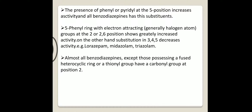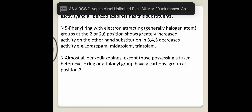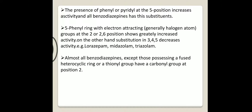The third point is the presence of phenyl or pyridyl at the fifth position increases activity, and all benzodiazepines have this substituent. The 5-phenyl ring with electron attracting halogen atom groups at the 2 or 2,6 position shows greatly increased activity. On the other hand, substitution at 3, 4, and 5 decreases activity.